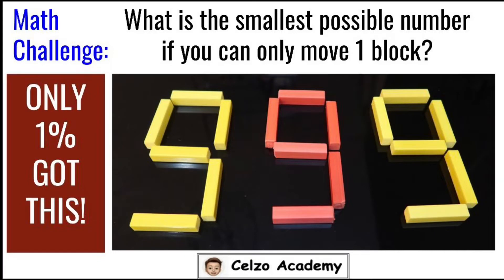Thank you for joining me again in the second series of puzzles involving blocks. In this puzzle, the blocks are arranged as the number 999. The goal is to move only one block to form the smallest possible number. I'll give you time to think about the puzzle, so feel free to pause the video and play whenever you're ready.